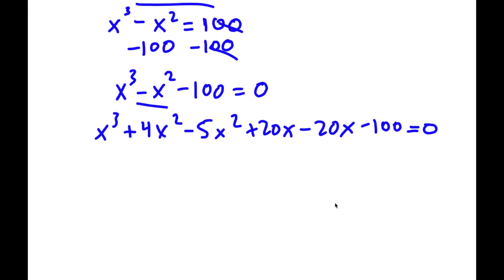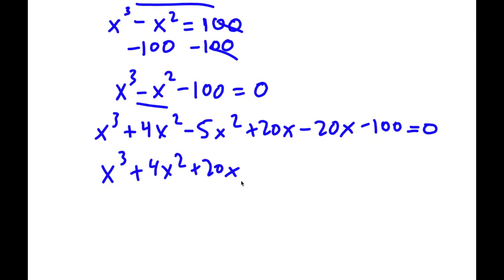You'll see why I did all of this in a minute. I'm going to reorder this and put it as x to the power of 3 plus 4x squared plus 20x, and then I have negative 5x squared minus 20x minus 100. This is equal to 0.